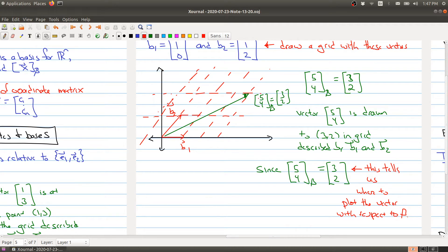Okay. So the idea is that you start with the vector 5, 4, but maybe you have different bases. So we have the bases B1 and B2, and you want to know where do you draw it with respect to B? Well, it tells you, in the grid formed by B, the vectors in B, you plot it to the point 3, 2.